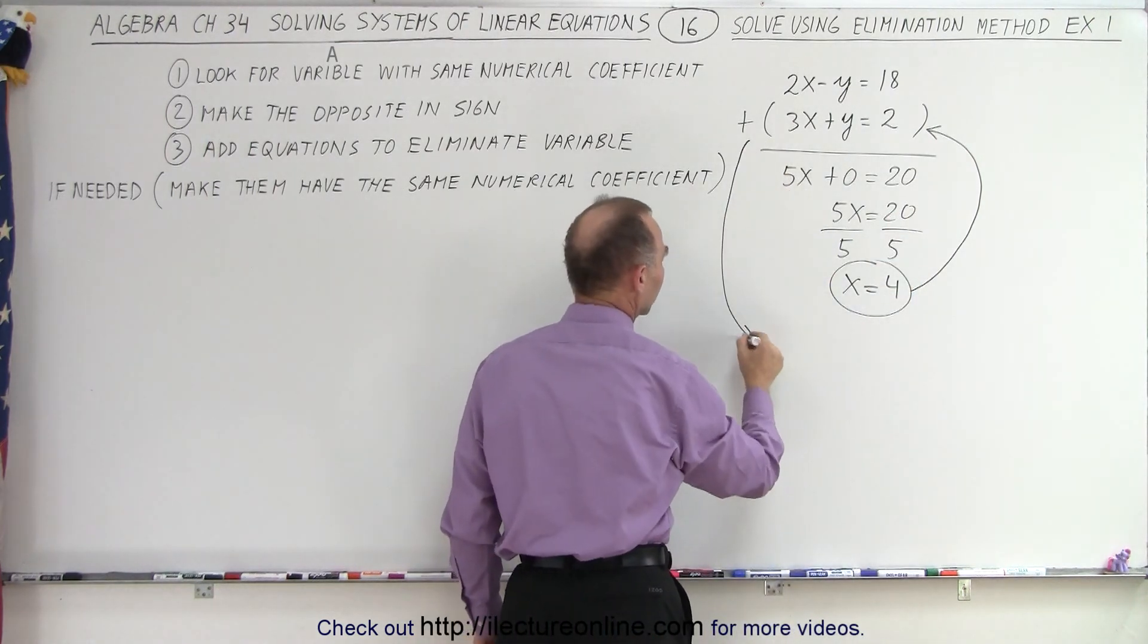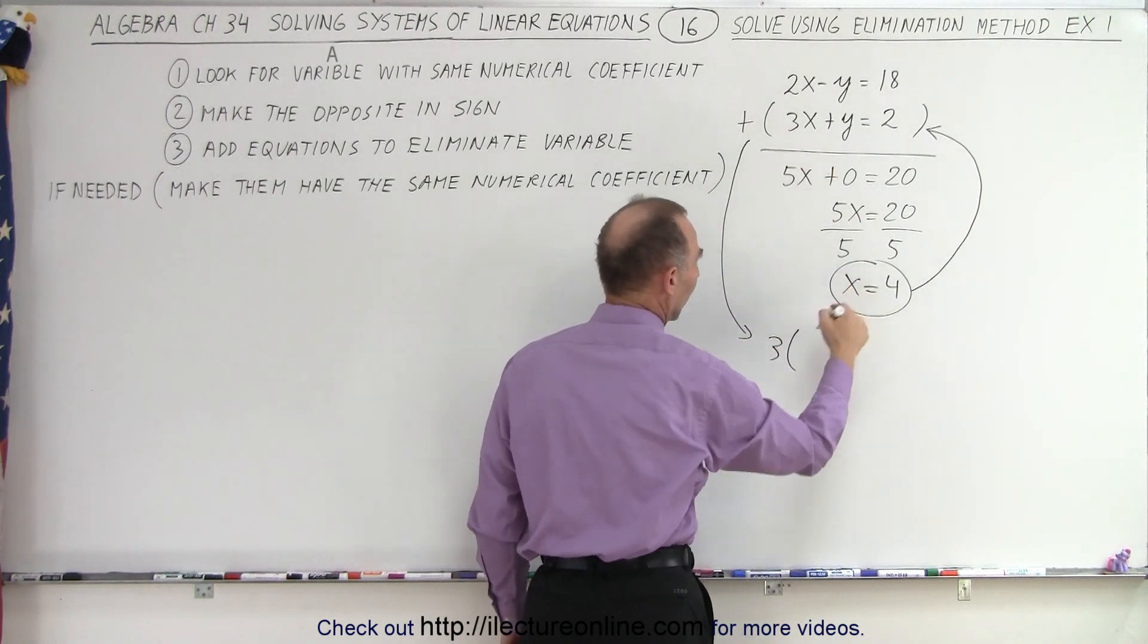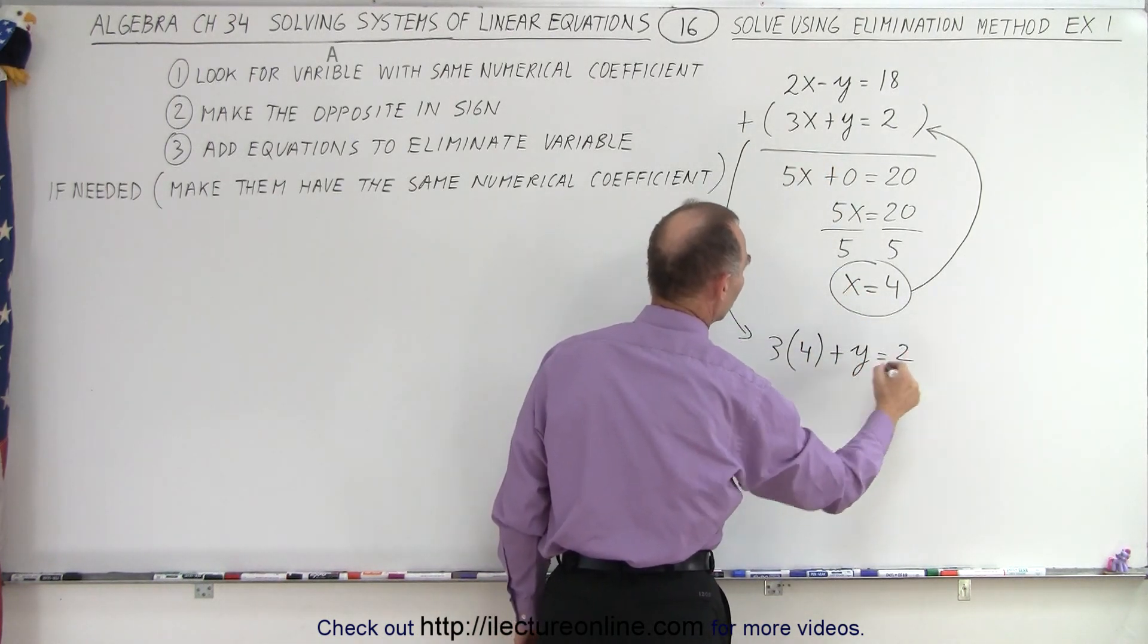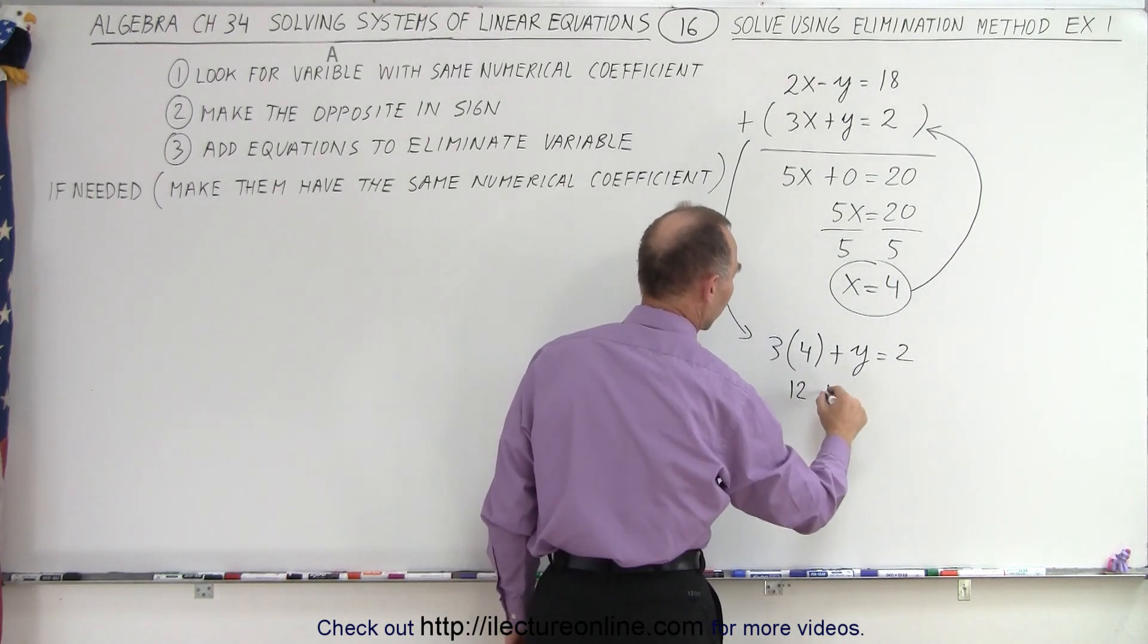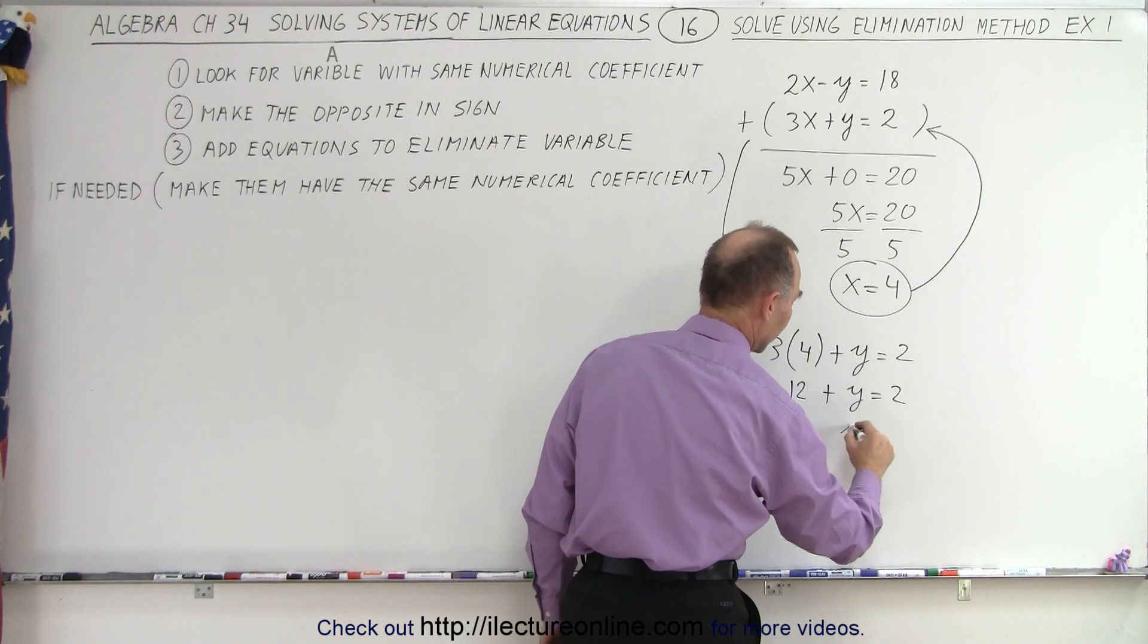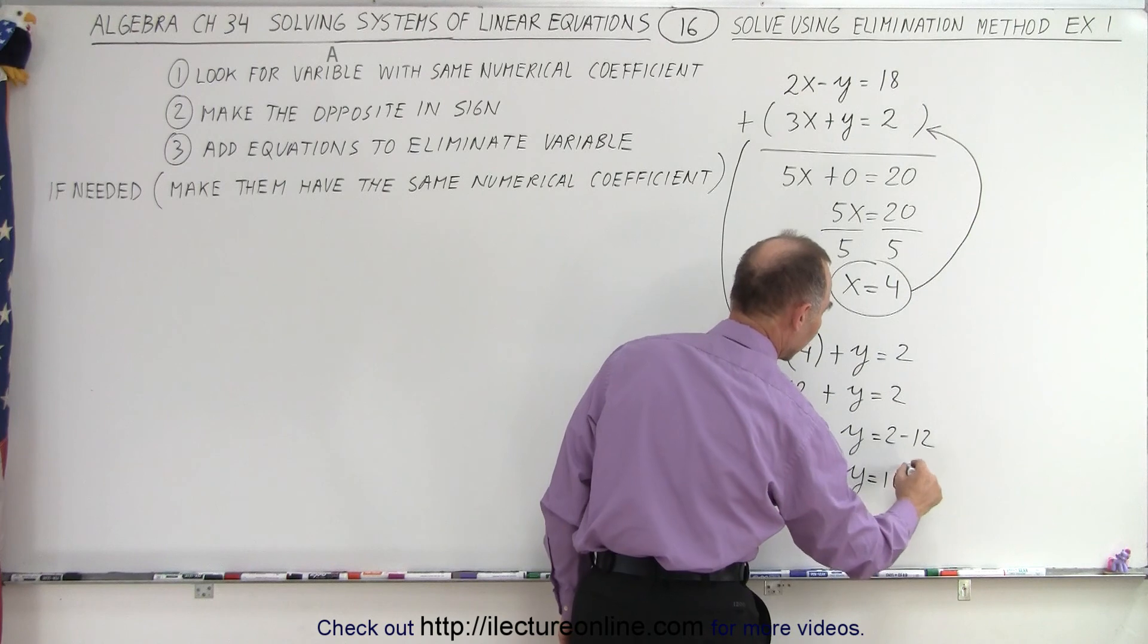So then we come back over here, and we get 3 times 4 plus y equals 2. That means 12 plus y equals 2. Now we move the 12 to the other side. We get y equals 2 minus 12, or y equals negative 10.